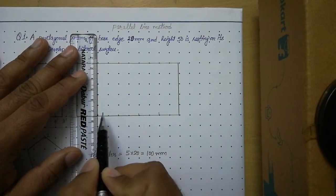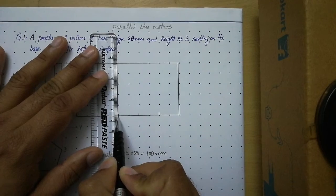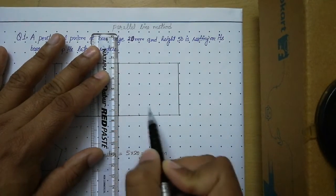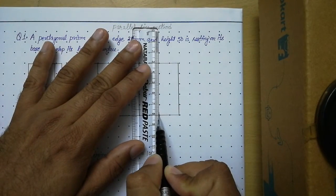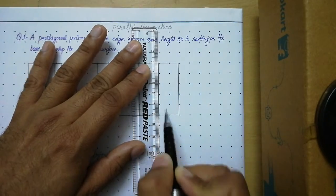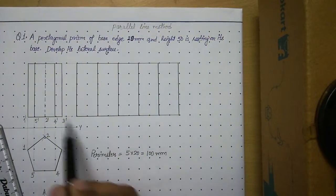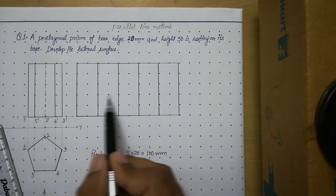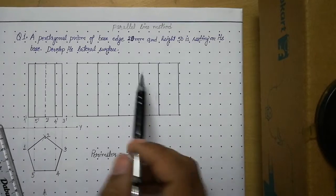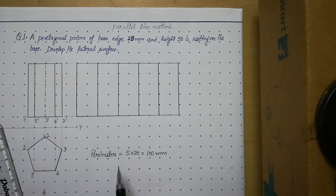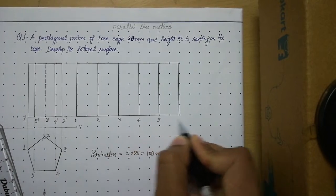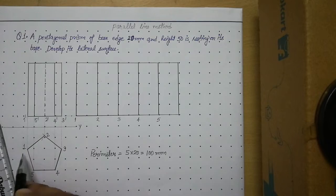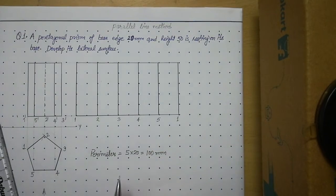From these division points draw thick lines. In the case of a cylinder these lines are kept thin because they are imaginary generators, but for a prism these lines are the real edges, so they must be thick. This is the main difference between the development of a cylinder and a prism. Now open the prism from edge 1: first edge, second edge, third edge, fourth edge, fifth edge, and back to edge 1 — this is the final answer.